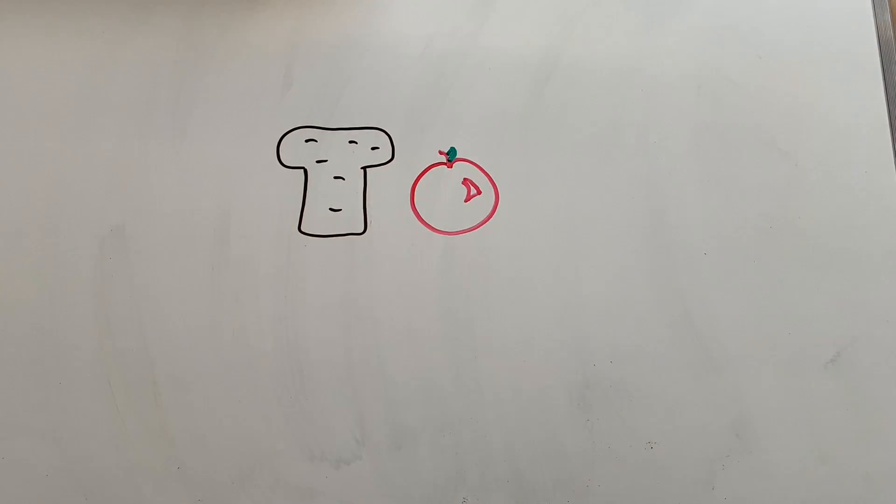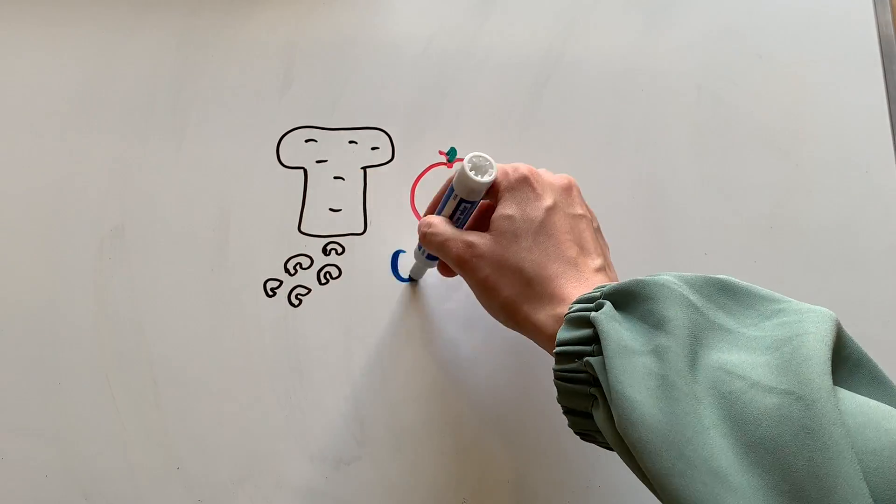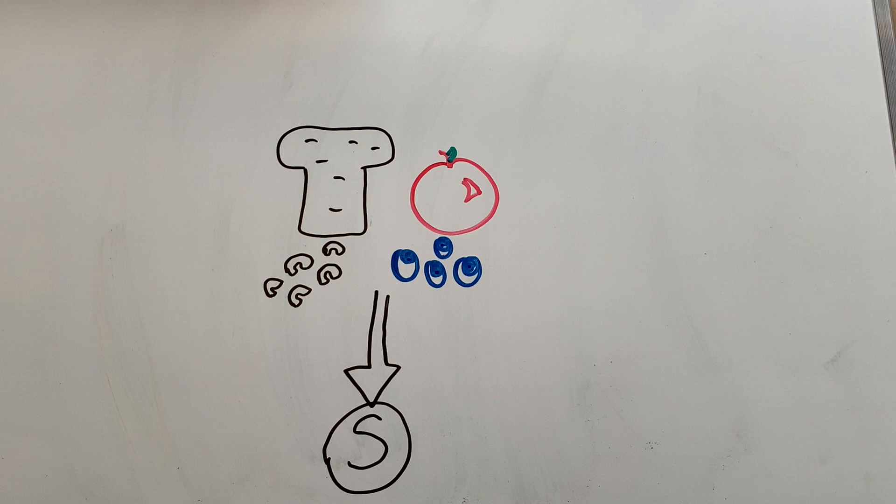Now I want to explain what actually happens when we eat food. When we eat foods like breads, fruits, pasta, and berries, it goes into our body and it turns into sugar.